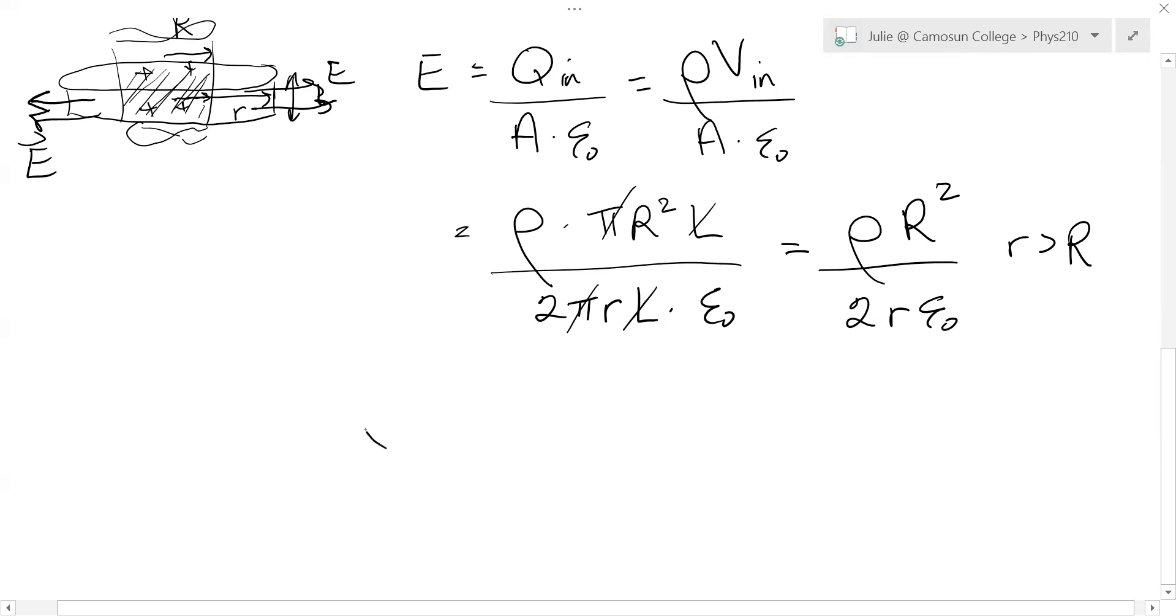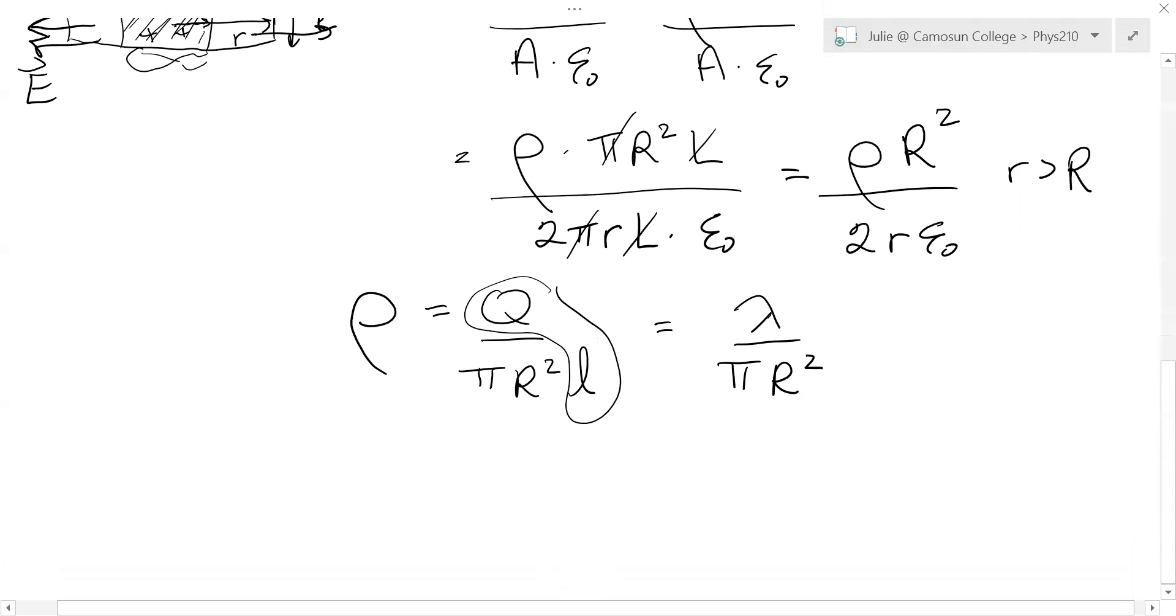the volume charge density is equal to the charge over the volume of the cylinder for any arbitrary length L. And then we see here that the q over L is in fact the same as lambda. So we can write this in terms of linear charge density over pi R squared. So if we want to put that into our expression for the electric field outside, this is only outside, we can do that. So instead of rho, we write lambda over pi R squared. And then we write the R squared over 2r epsilon naught.